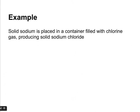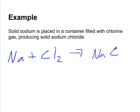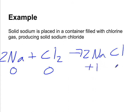Let's look at this reaction as an example: solid sodium placed in a container filled with chlorine gas produces sodium chloride. First we balance it — we have two chlorines, so we put a coefficient of two in front of both sodium and sodium chloride. Then we assign an oxidation number to each element on both sides of the reaction arrow. Solid sodium and chlorine gas are in their natural states, so they both start with an oxidation number of zero. On the product side they're monatomic ions, so sodium is plus one and chlorine is minus one.